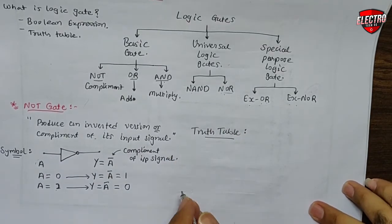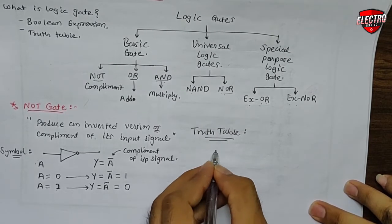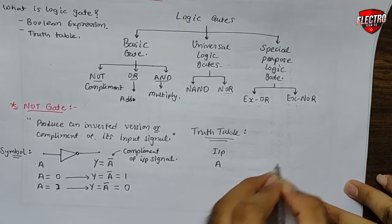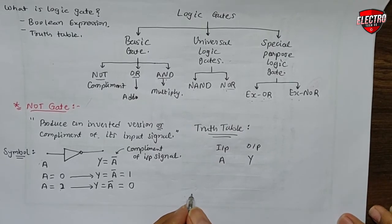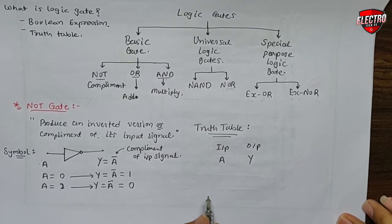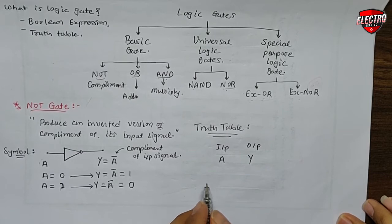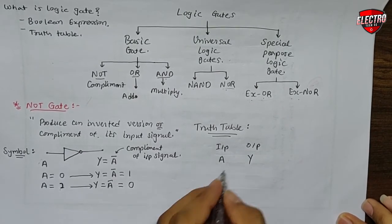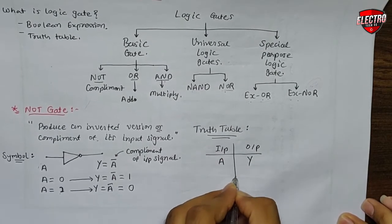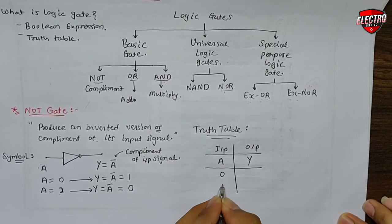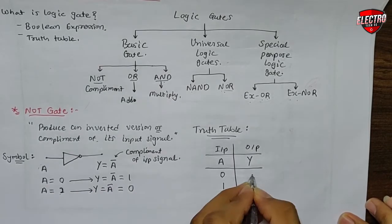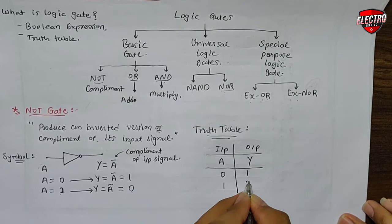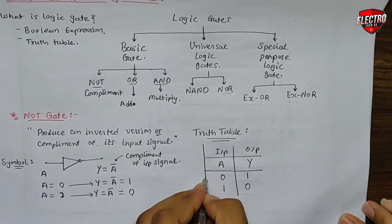Next is the truth table of the NOT gate. The input signal is A and the output signal is Y. The truth table contains all the possible combinations of input signals and the corresponding output signals in the form of one table. The possible input combinations are 0 and 1. If we apply 0 then we get output 1, and if we apply 1 then output is 0.